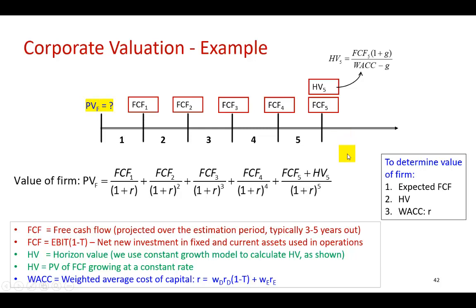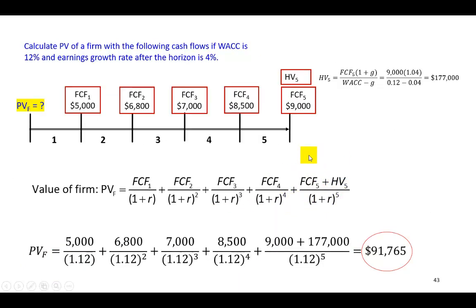So now, with that, noting that the horizon value in this example of the fifth year occurs at the same point in time as the fifth year's free cash flow, we can add the two together in the discounting process to make it quick and easy for us. So, in this example, let's say that we wish to calculate the present value of a firm with the following cash flows if the weighted average cost of capital is 12% and earnings growth rate is 4%. So, first order of business here is to calculate the horizon value at the end of the fifth year using the constant growth model. And you can see the substitutions here, which include the fifth year's free cash flow. And so, we're saying that at the end of the fifth year, the intrinsic value of this firm is going to be around $177,000.